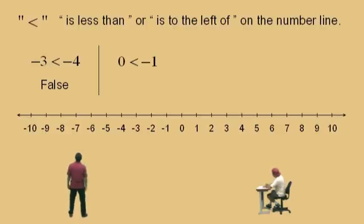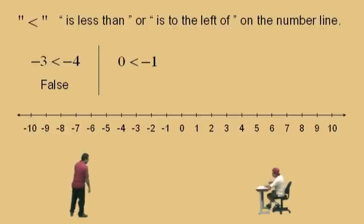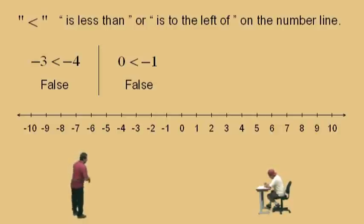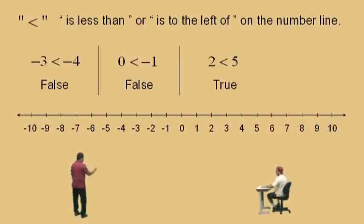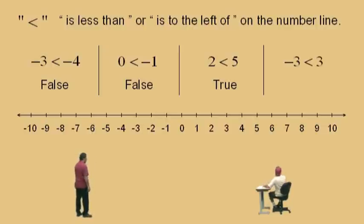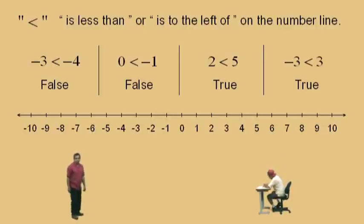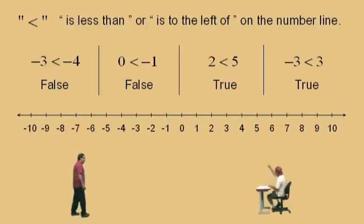Here we go, Charlie. Is zero less than negative 1? No, it's not. Zero is not to the left of negative 1, so that is a false statement. Is 2 less than 5? Yes, it is. 2 is to the left of 5. Is negative 3 less than 3? Yes, that is true. 3 is the bigger number. You look at a number line, no problem.